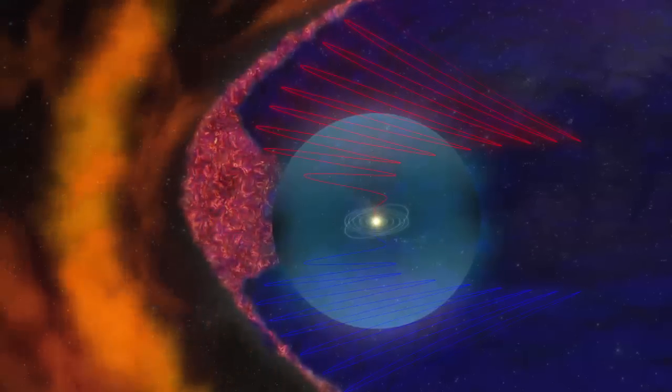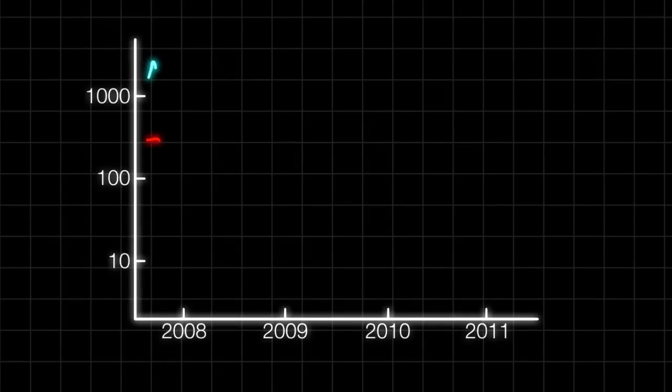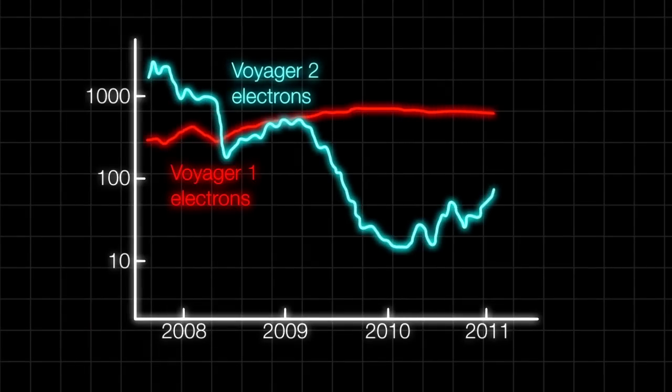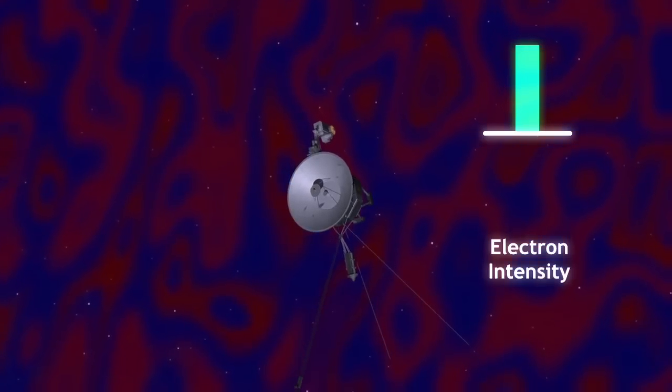The nature of the bubble region explains why Voyager 2 has been seeing variations in the number of energetic particles compared to Voyager 1. Because of its path, Voyager 2 has been passing in and out of the bubble region.